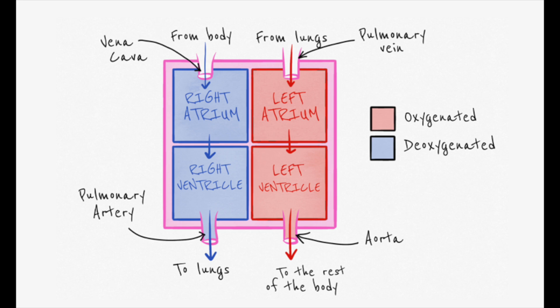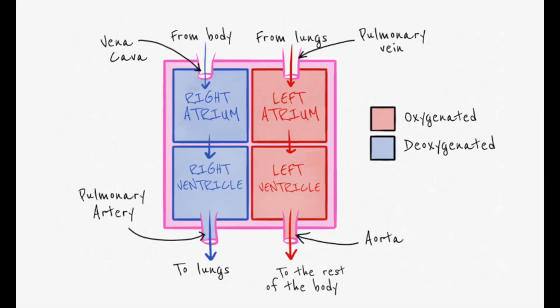The cells use up that oxygen in respiration, so the blood becomes deoxygenated. It needs to return to the lungs to become oxygenated again, but first it must return to the heart. It does this by travelling in the vena cava vein to the right atrium. The right atrium contracts forcing blood into the right ventricle, which then contracts forcing blood into the pulmonary artery. This blood is then returned to the lungs where it can pick up more oxygen.